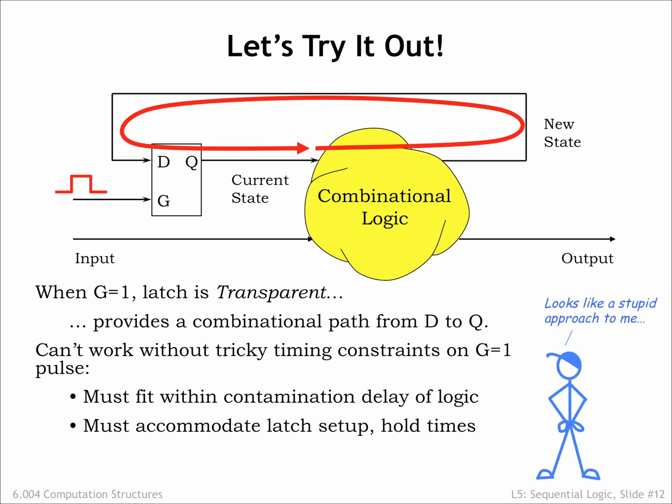This sort of tricky system timing would likely be error-prone since the exact timing of signals is almost impossible to guarantee. We have upper and lower bounds on the timing of signal transitions, but no guarantees of exact intervals. To make this work, we want a load signal that marks an instant in time, not an interval.